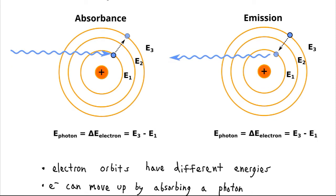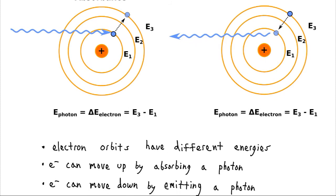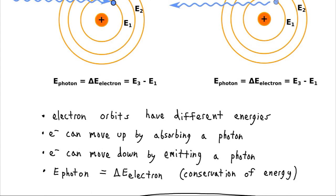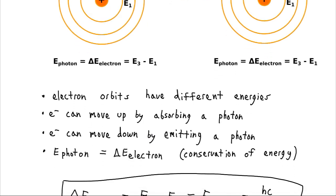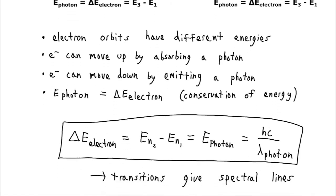So, we have electron orbits with different energies. And our electrons can move up by absorbing a photon or down by emitting a photon. And the difference in energy of those two positions of the electron is going to correspond to the energy of the emitted photon. So, now we can connect our energies for our electrons to the wavelengths and frequencies of these photons and figure out these spectral lines.